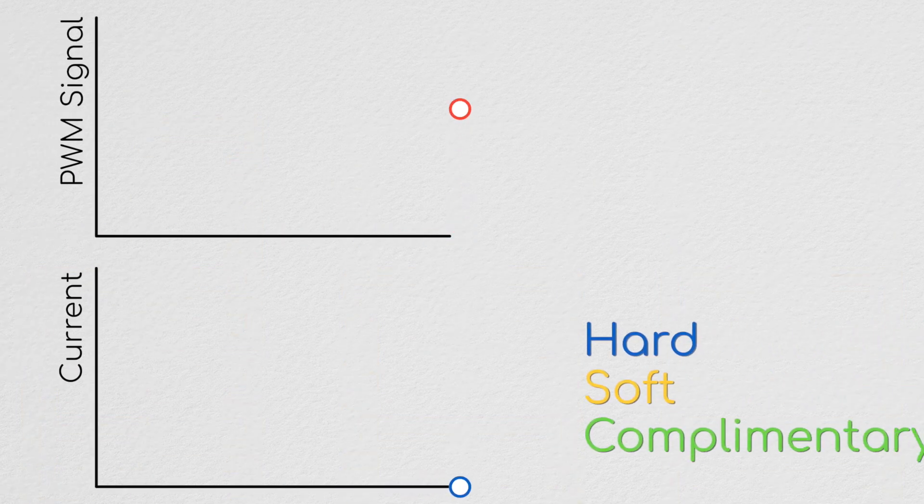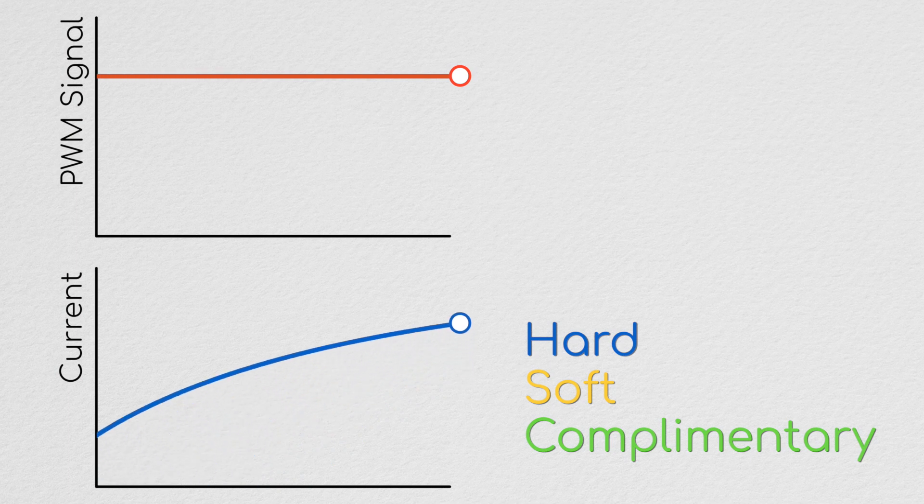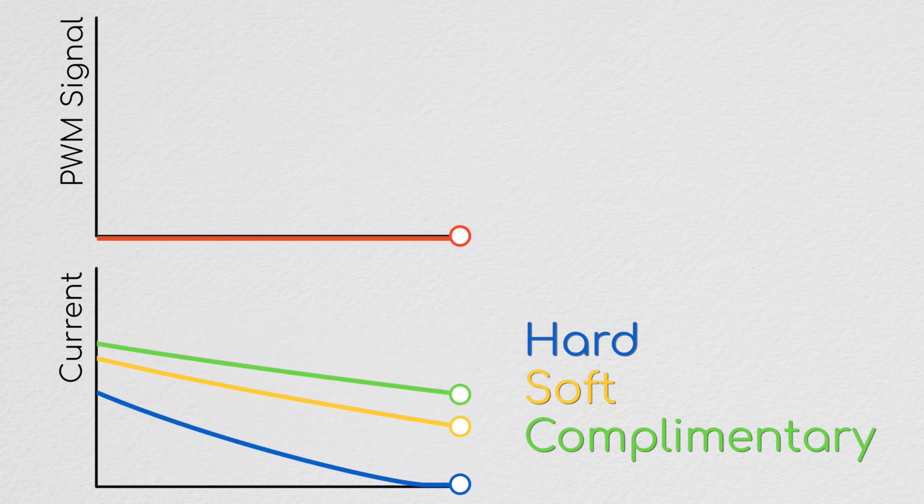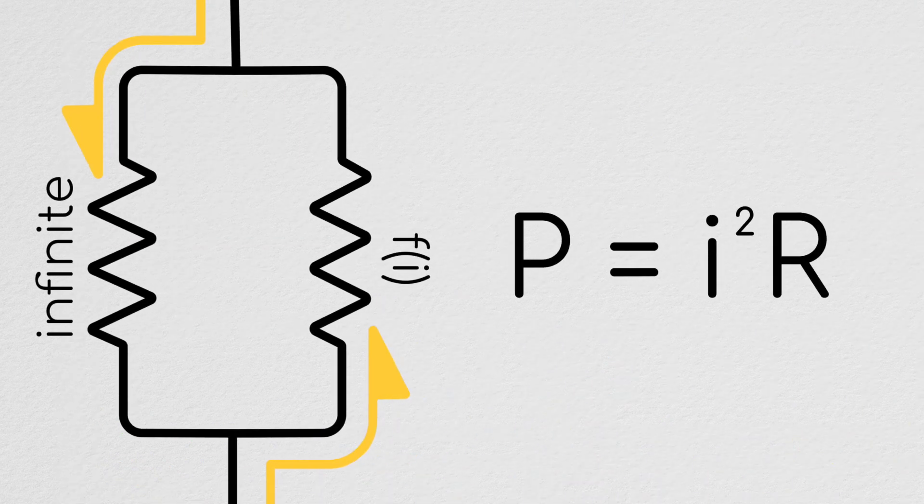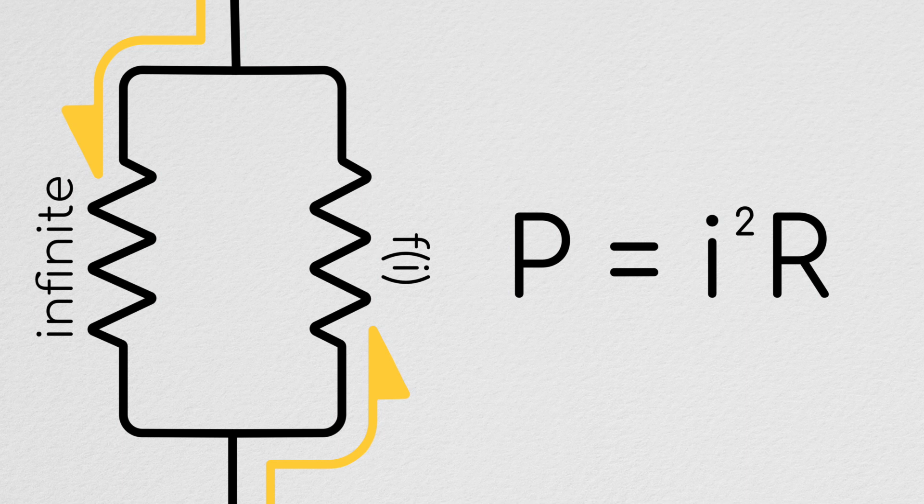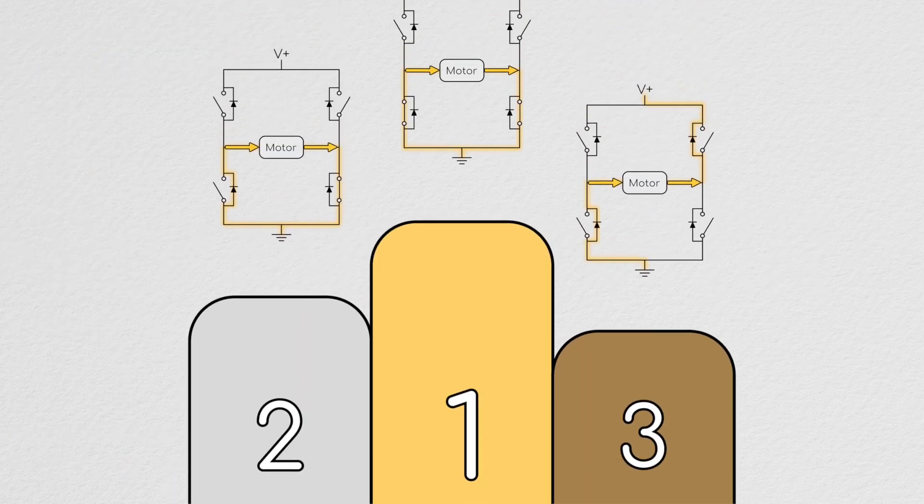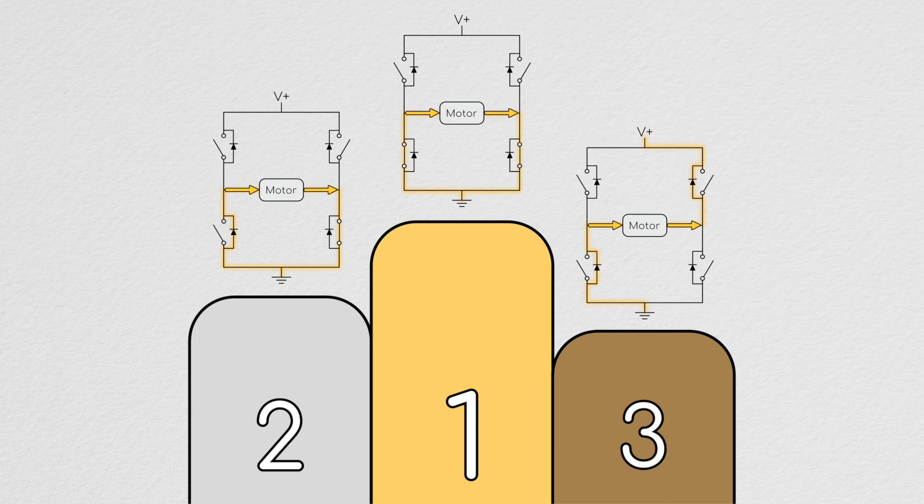This voltage pushing back on the current will cause it to decay more quickly, and this faster rate of decay makes high resolution current tracking more difficult. Additionally, the resistive energy losses in the diodes during hard and soft switching means that your overall efficiency is lower. For all of these reasons, it is generally recommended that complementary switching be used during six block commutation.